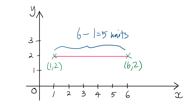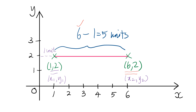How do we get 6? Because for this point, the x-coordinate is 6. Therefore, the horizontal distance from the y-axis will be 6 units. And for the first point, the x-coordinate is 1, so the horizontal distance is 1 unit. That explains how we get 6 minus 1 equals 5 units. So we can find horizontal distance by taking x2 minus x1, if we label the points as (x1, y1) and (x2, y2).